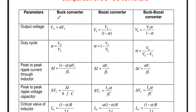All three converters consist of one transistor, one load resistor, one inductor, and one capacitor — which acts as a filter. Based on the connection, they work in different ways.